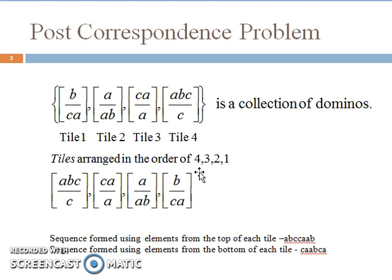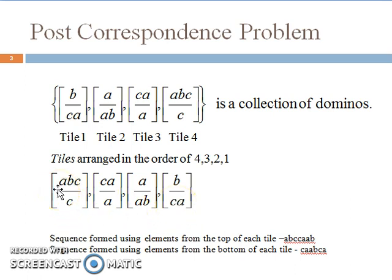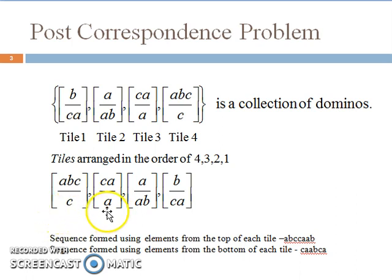Say for example we form a sequence by placing tiles in the order 4, 3, 2, 1, as shown here. Then the sequence formed by elements on the top is A, B, C, CA, AB, and the sequence formed by elements at the bottom of each tile is CA, AB, CA. We note that the top sequence and the bottom sequence do not match.